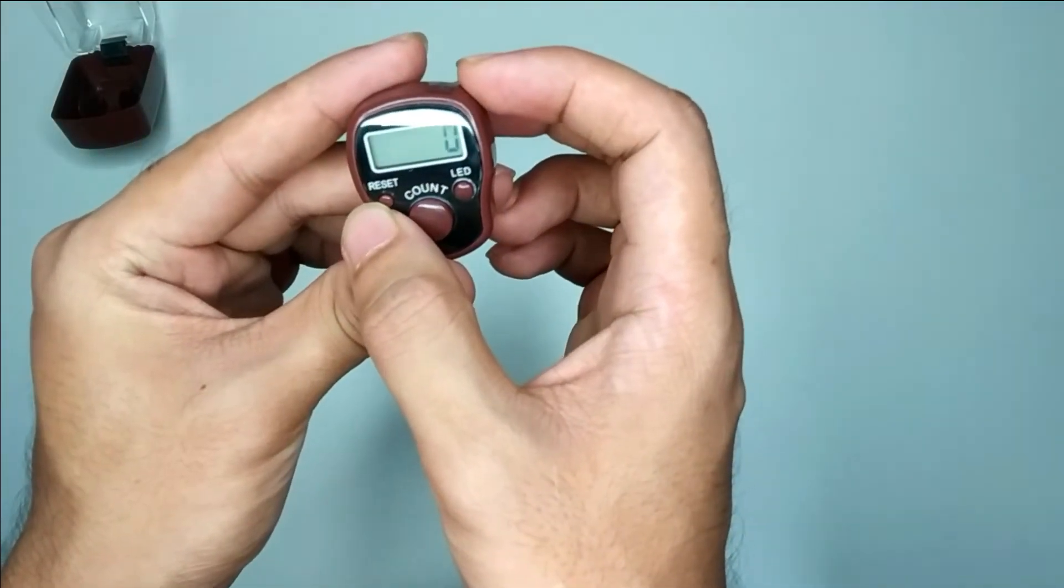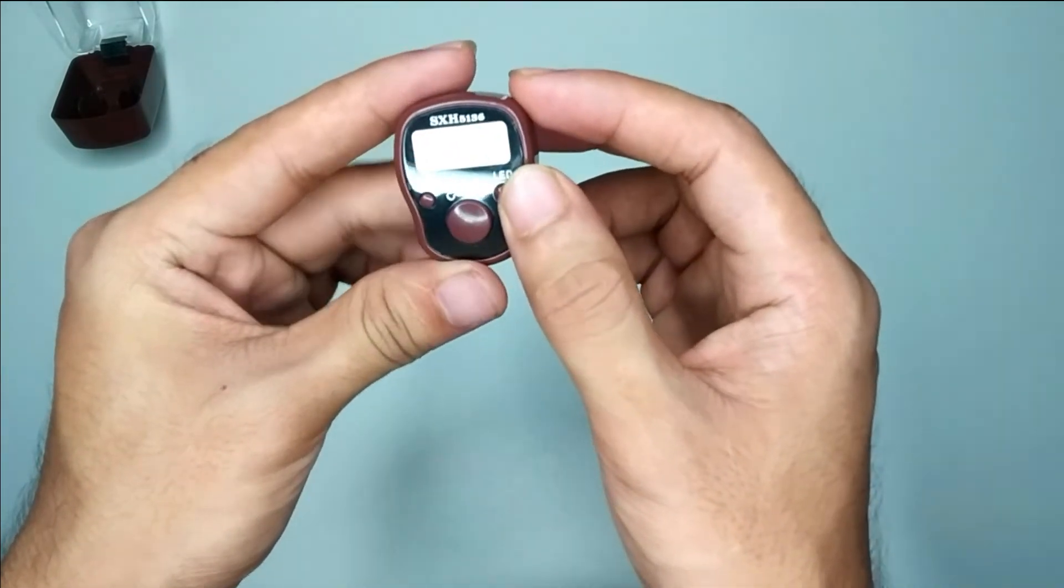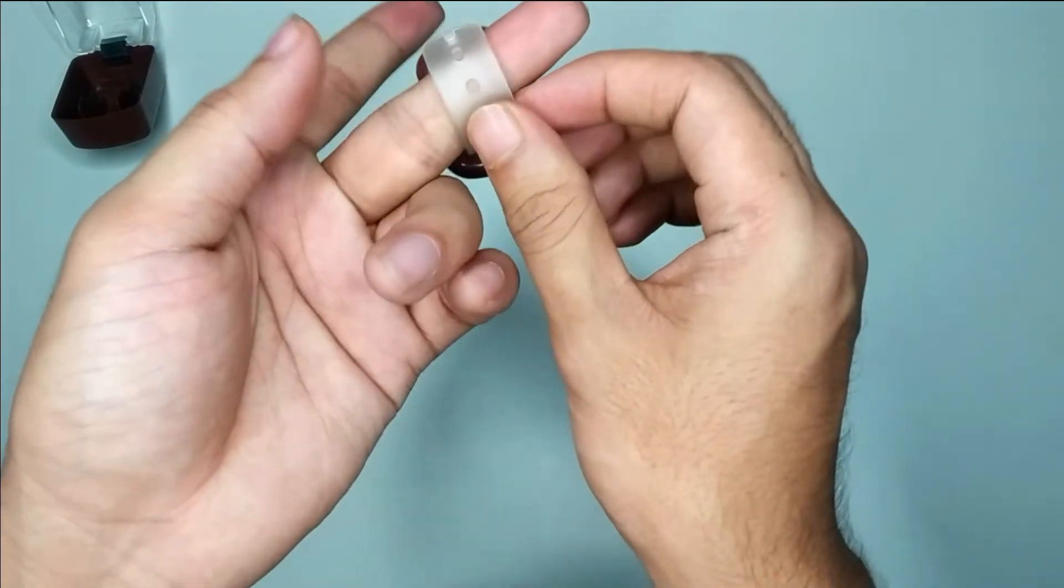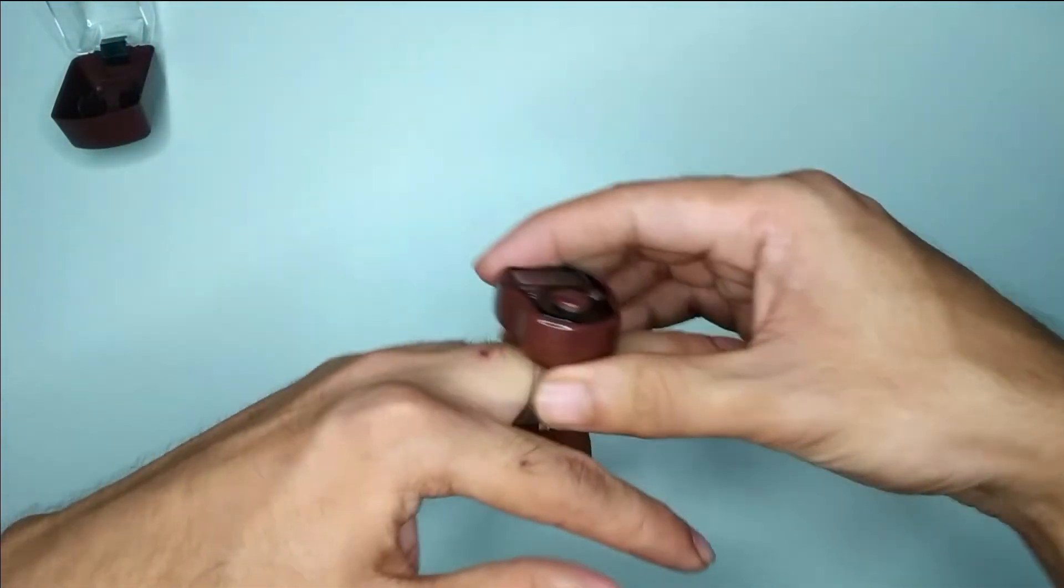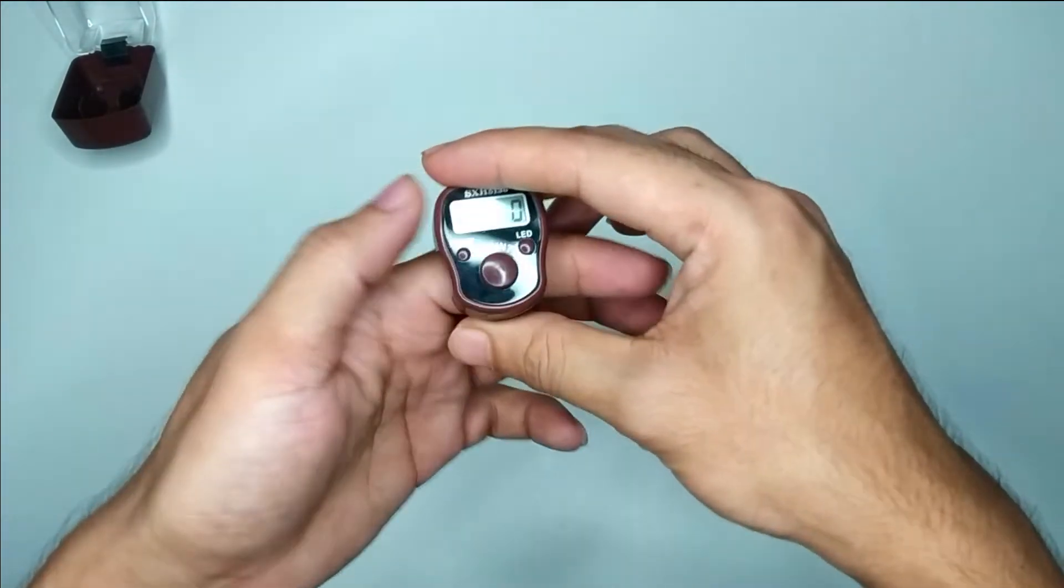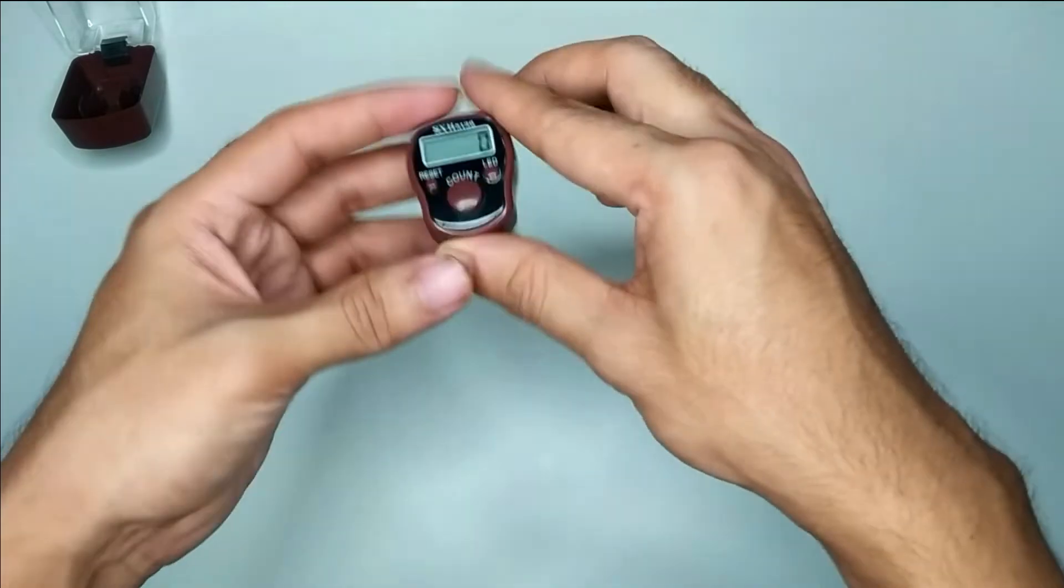The first one is reset, counter, and LED option. There is a belt you set on your finger. You can set it on any finger. I just set it on my right hand.